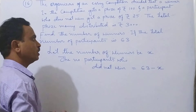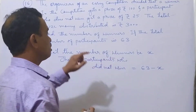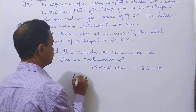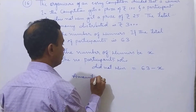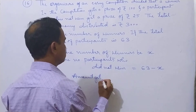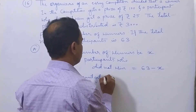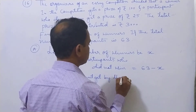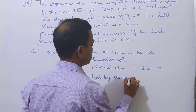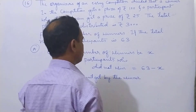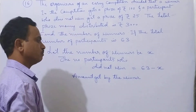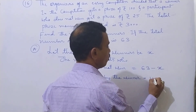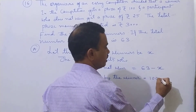Now, what we should do here: amount get by the winners. Winners get Rs 100 each, so the amount for winners is 100 multiplied by x, that is 100x.